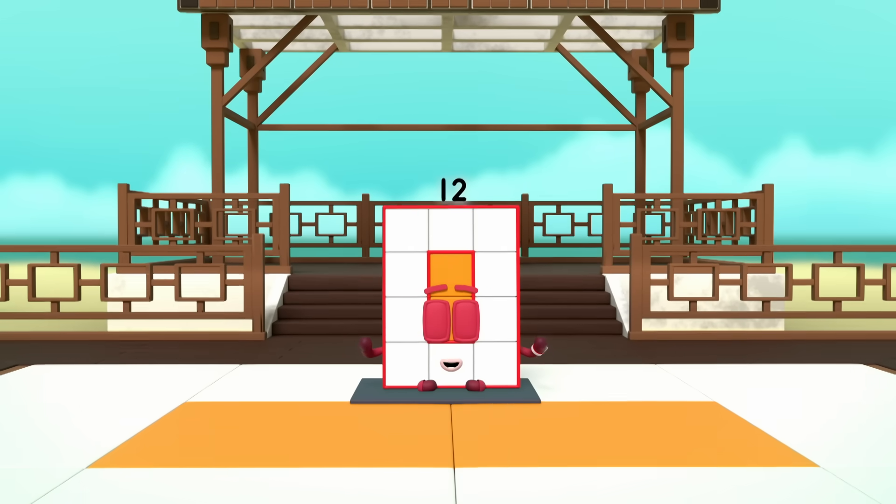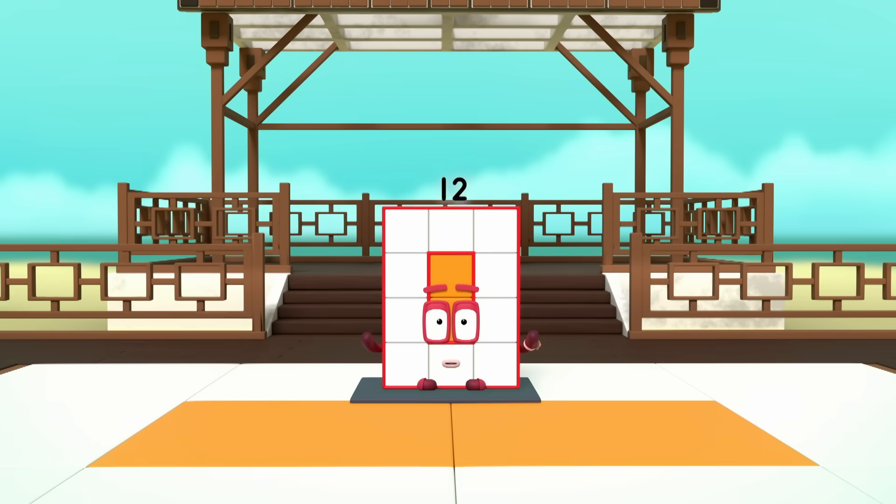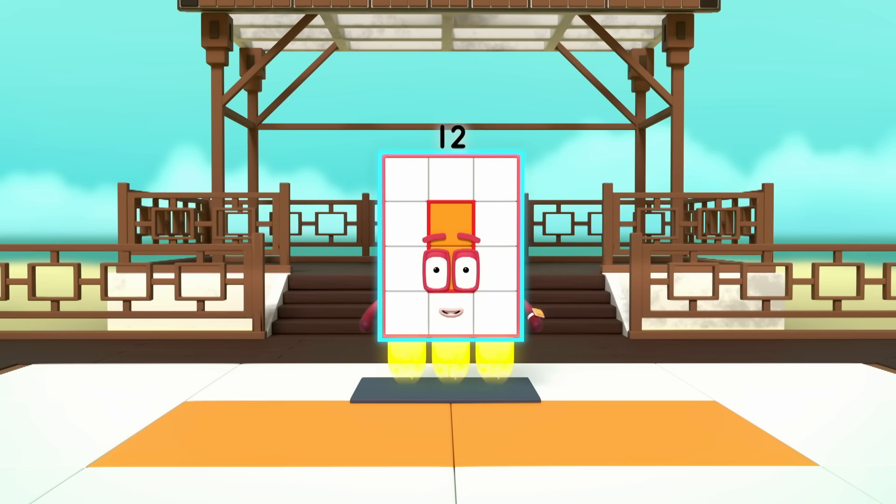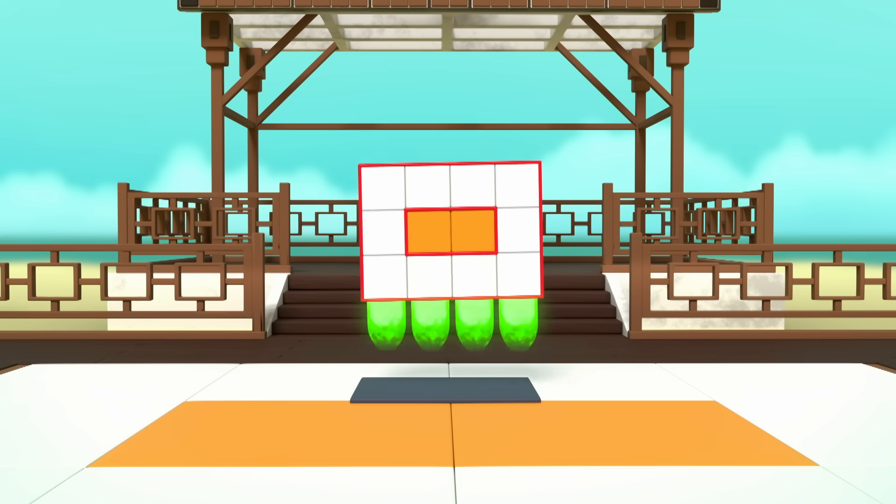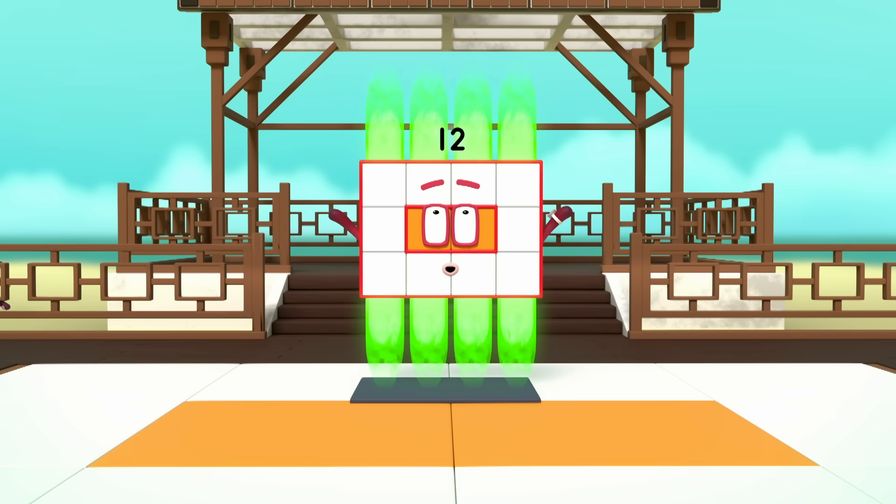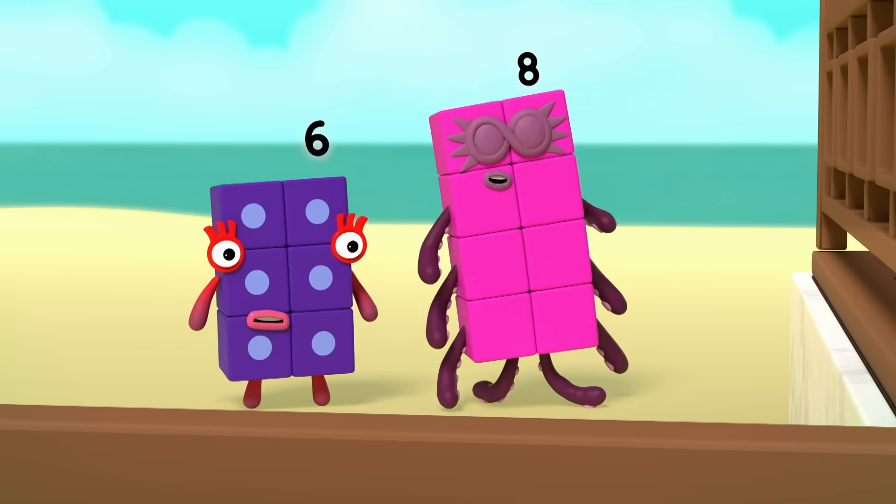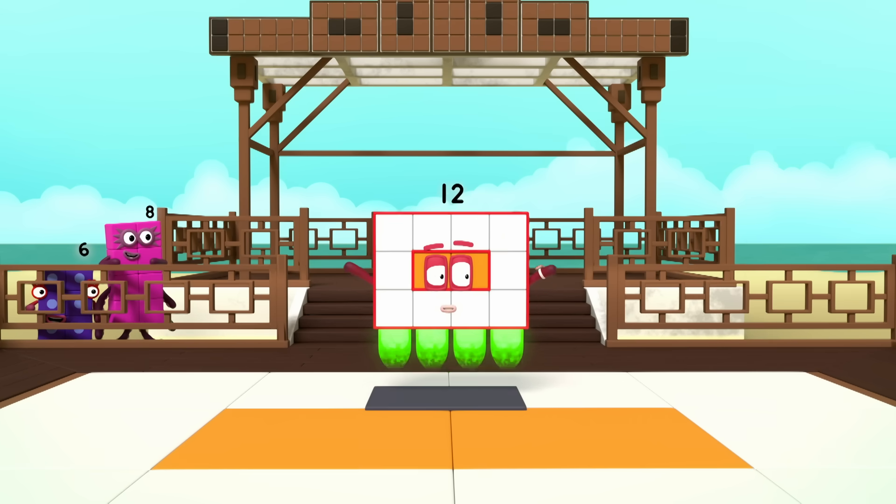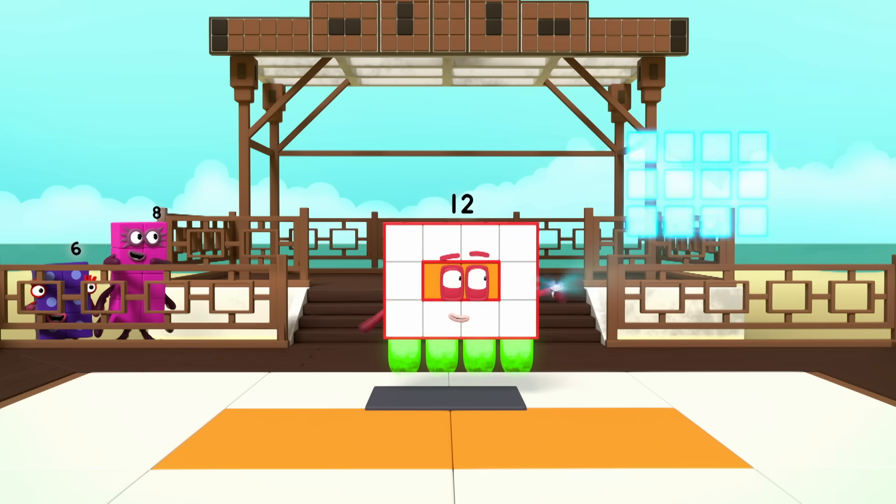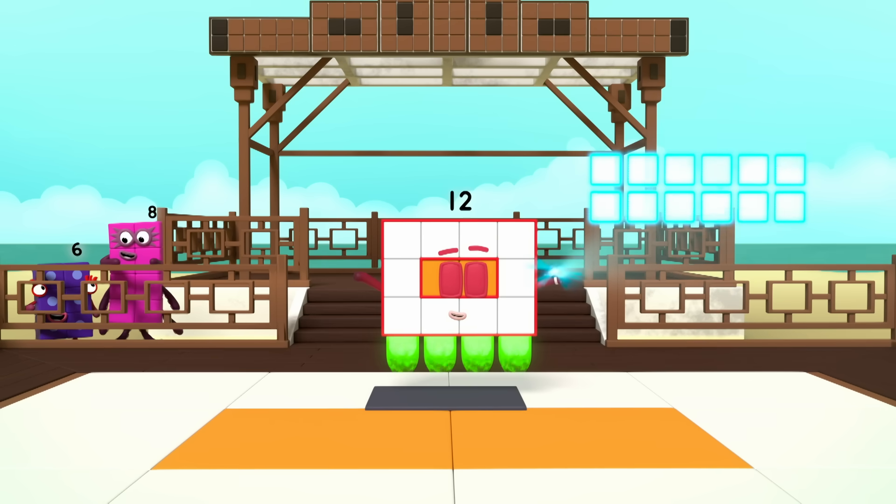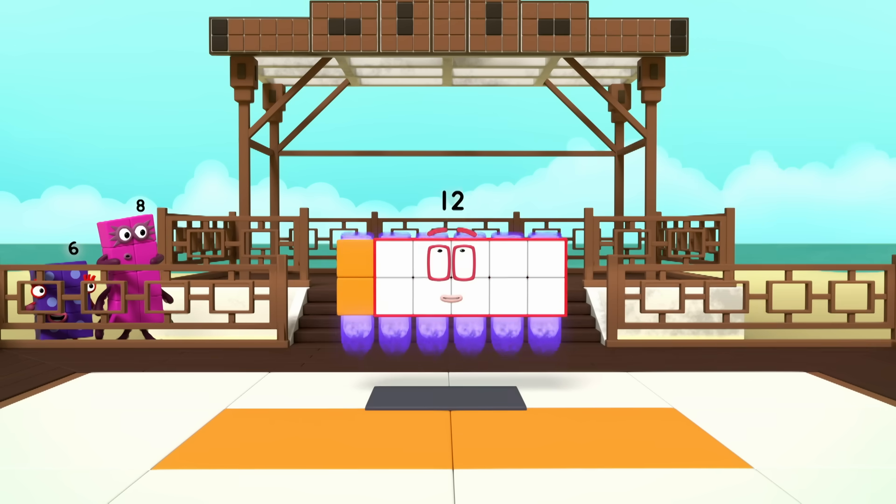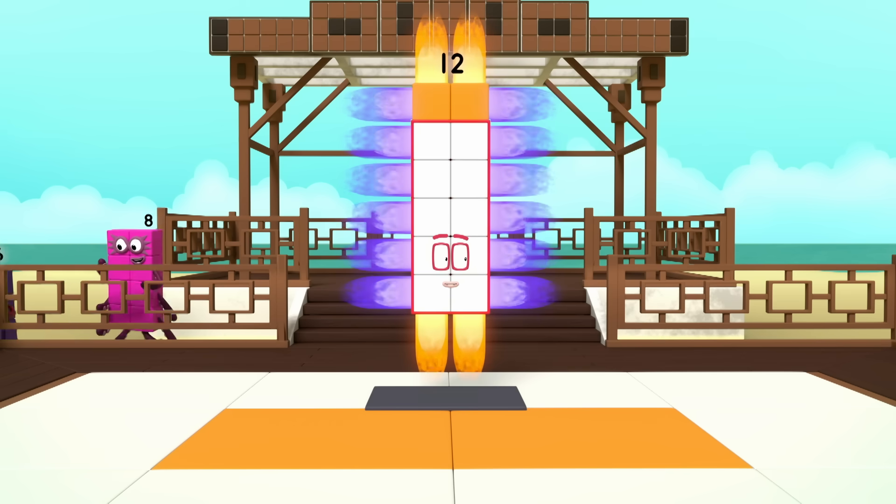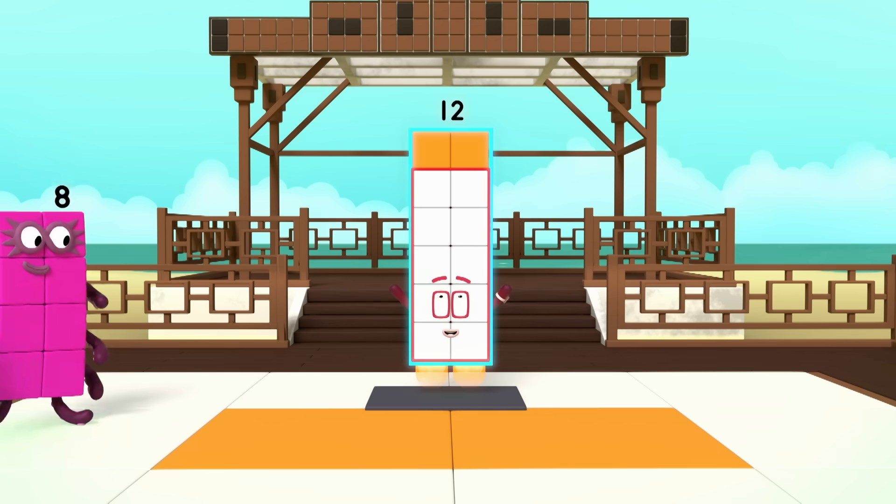I am 12. I am 3 by 4. I am a rectangle. Turn! I am also 4 by 3. And I am a super rectangle. I can take many forms. Switch! I am 6 by 2. Turn! I am 2 by 6. I am a rectangle!